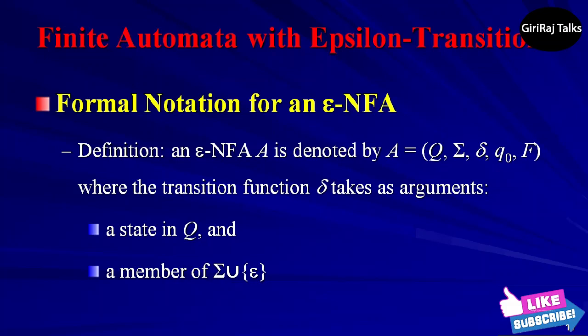Except that δ is now a function that takes as arguments: a state in Q and a member of Σ union epsilon, that is either an input symbol or the symbol epsilon. We require that epsilon, the symbol for the empty string, cannot be a member of the alphabet Σ, so no confusion results.